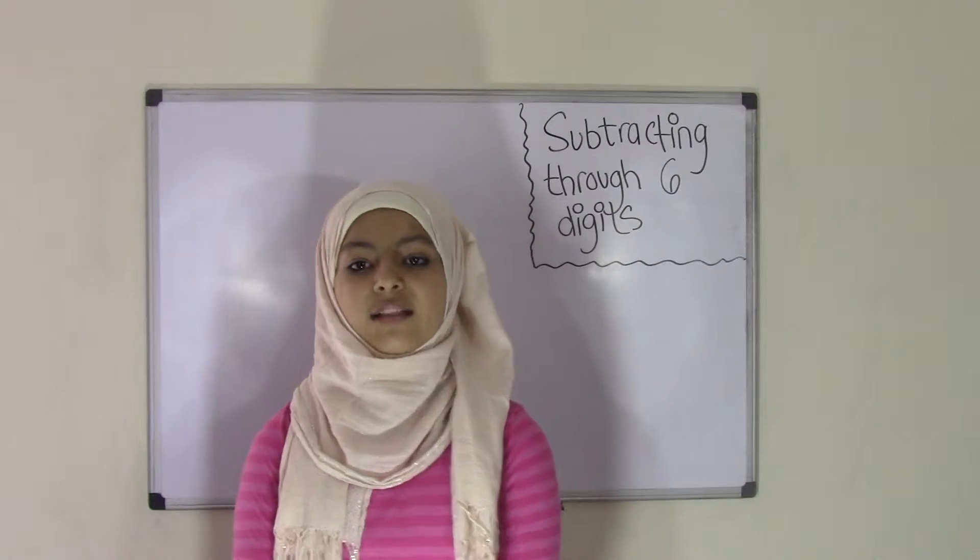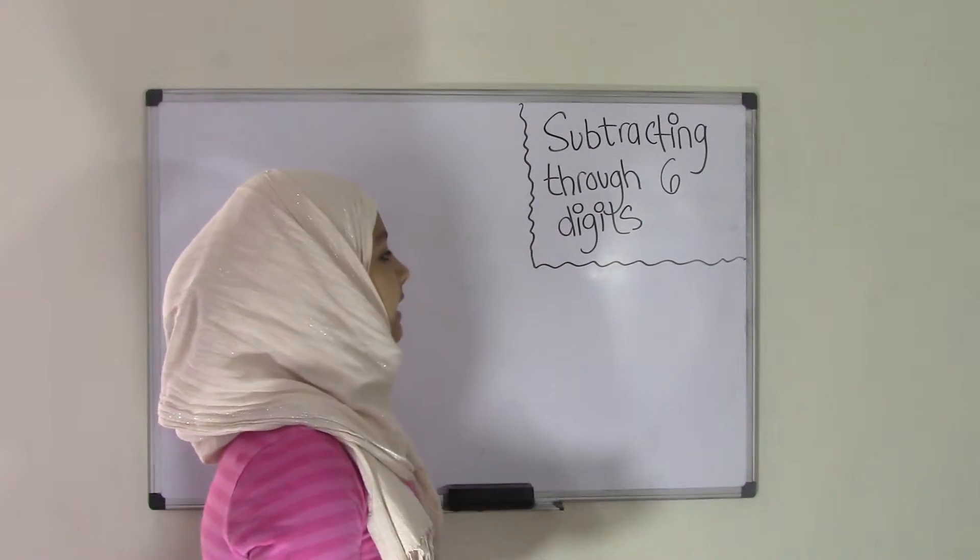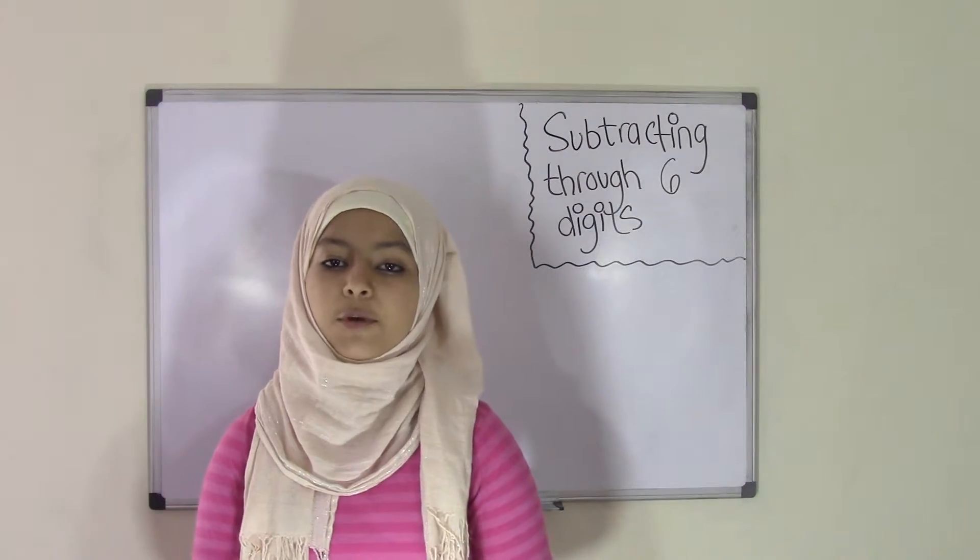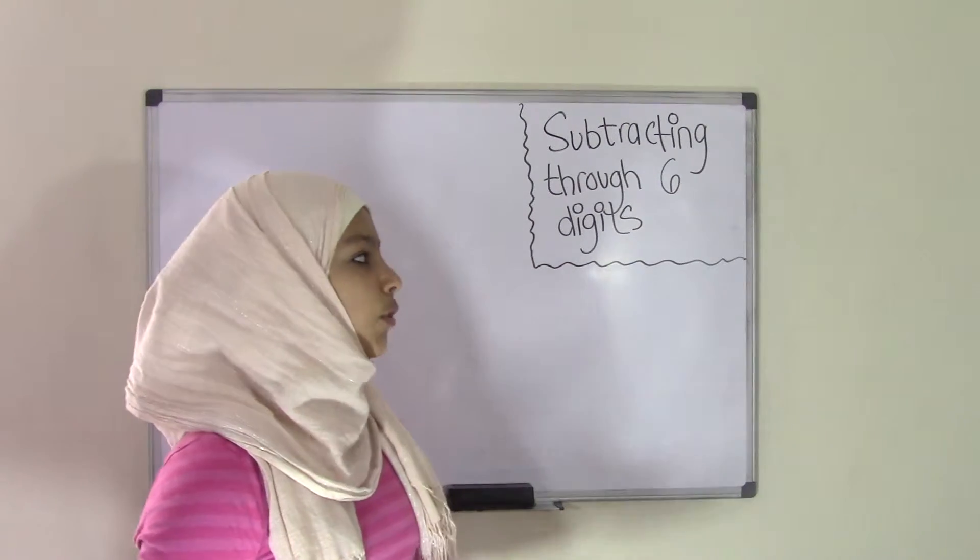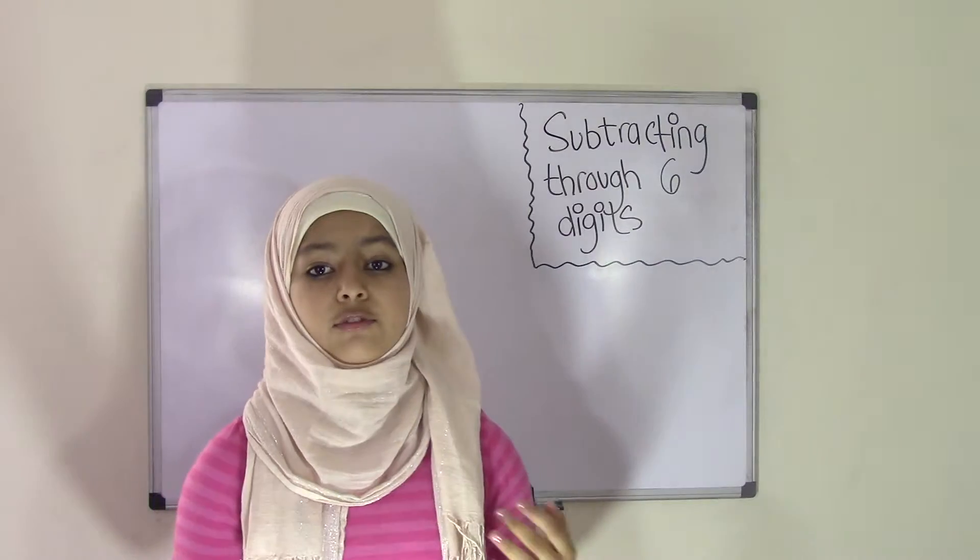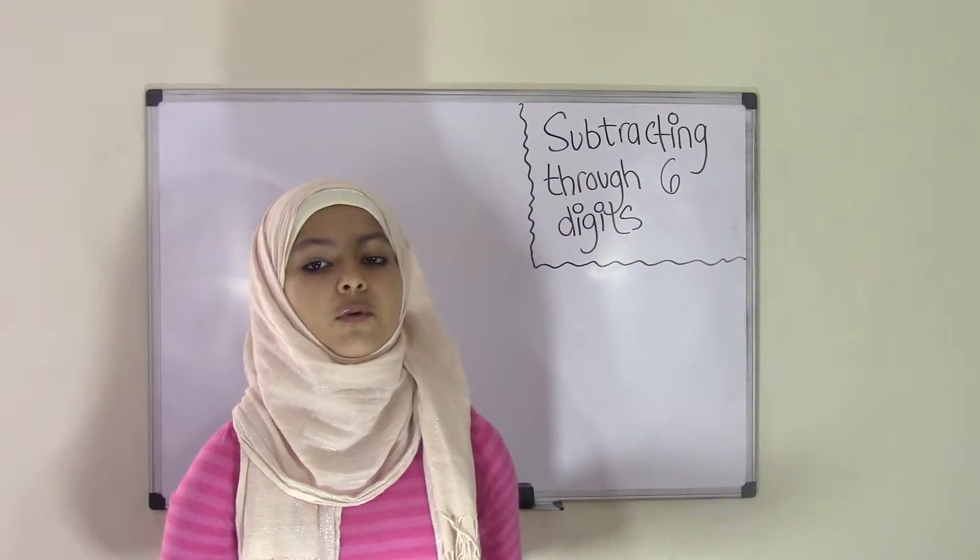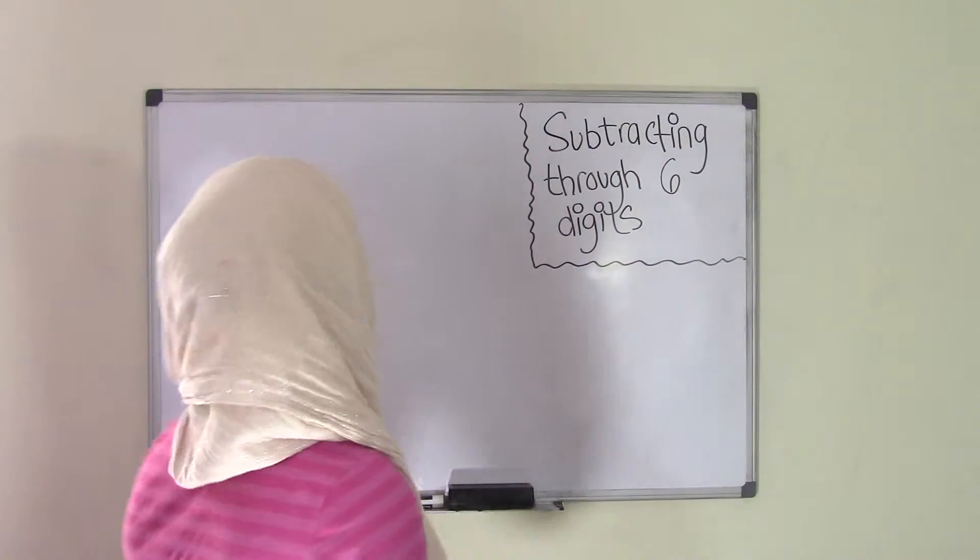Hey guys, welcome back to Paramus' Math Club. Today's topic is subtracting through six digits. Now in our previous video, we talked about adding through six digits. Well, this is pretty much the same thing except we're using the reverse operation of addition, which is of course subtraction. So let's get started.